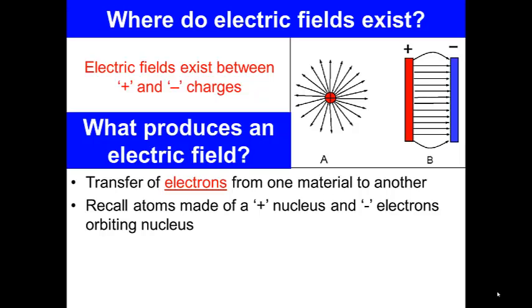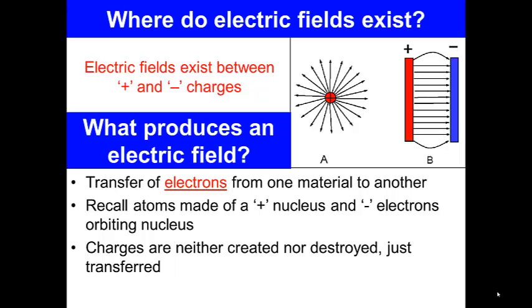Recall atoms are made out of a positive nucleus and negative electrons orbiting the nucleus. Charges are neither created nor destroyed, just transferred.